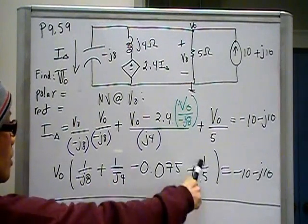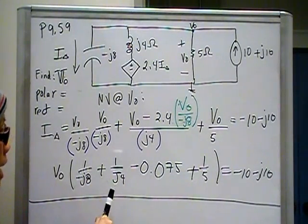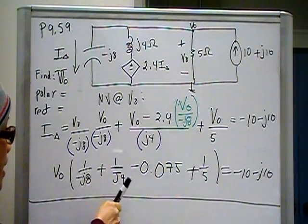This here is plus 1.5. That should equal negative 10 minus J10. So once you take that result, get a rectangular form from that, divide that by this.